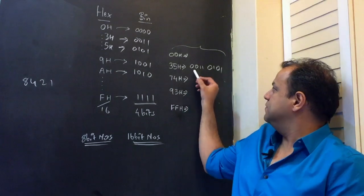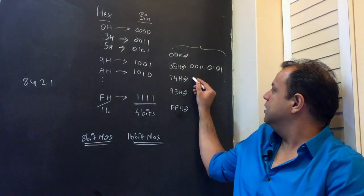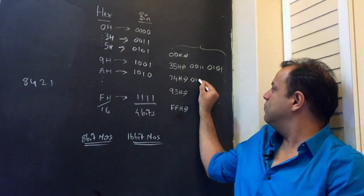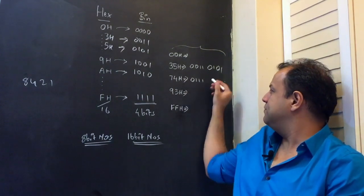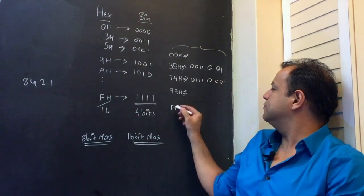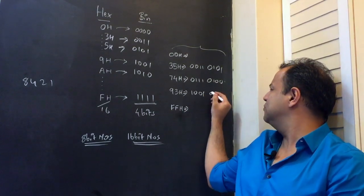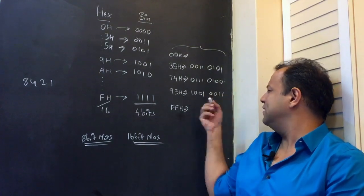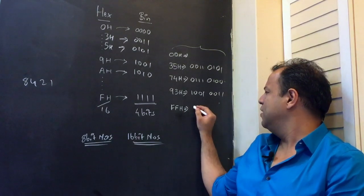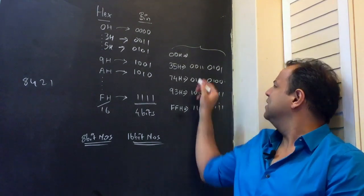So 35: 3 is 0011, 5 is 0101. 74: 0111 is 7, 0100 is 4. 93: 1001 is 9, 0011 is 3. F: 1111, 1111.